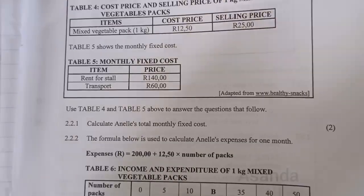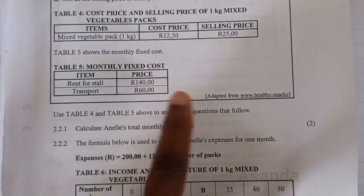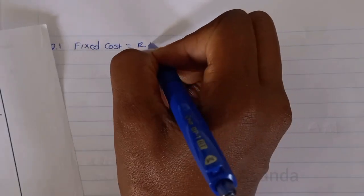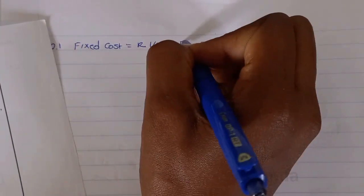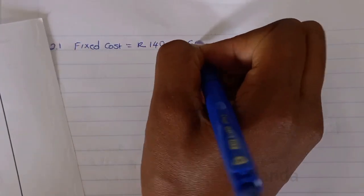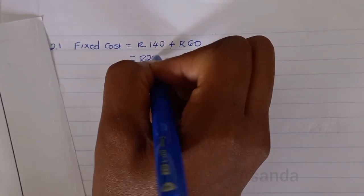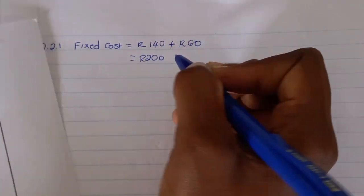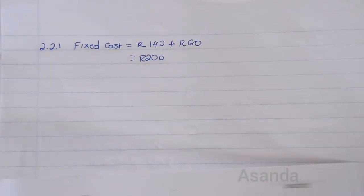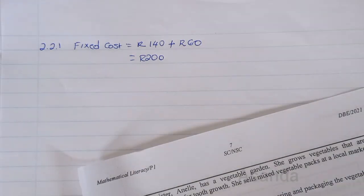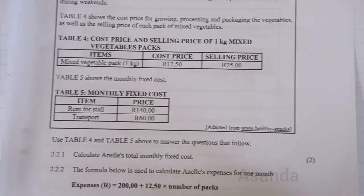Rent is R140 and transport is R60, giving her a total fixed cost of R200. That is fixed every month — every month she has to make sure she has this money for rent and transport.